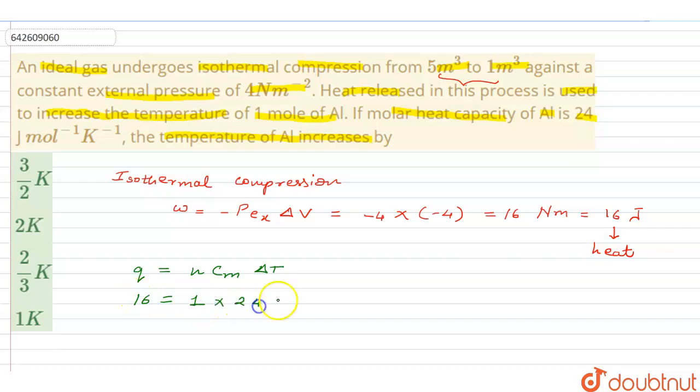...one mole into 24 into delta T. Or we can also say that delta T equals 16 upon 24. So that's 4 into 4, 4 into 6... this will become 2 by 3 kelvin.